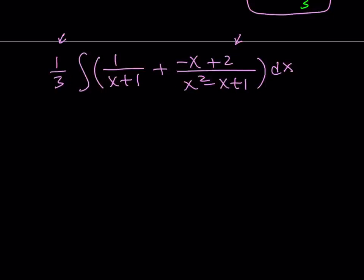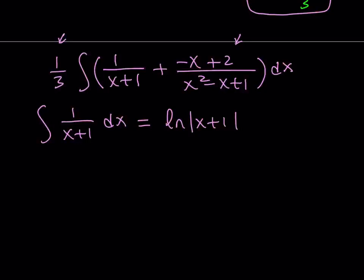The integral of 1 over x plus 1 is fairly easy — it's just a natural log. The integral of 1 over x plus 1 dx equals ln absolute value of x plus 1. I'll put the constant at the end. Now let's focus on the second part: negative x plus 2 divided by x squared minus x plus 1.